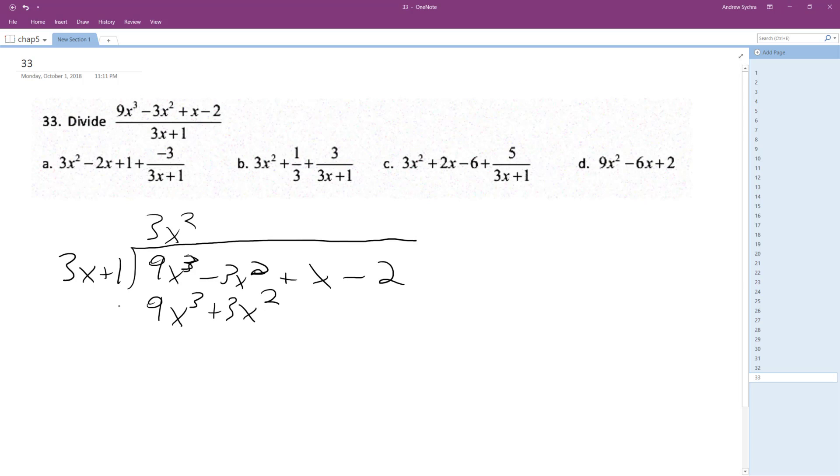Change the signs, and what we end up with is minus, because this becomes a minus, we get minus 6x squared.